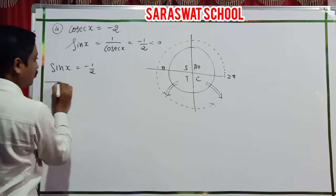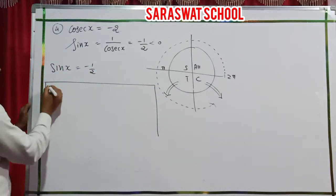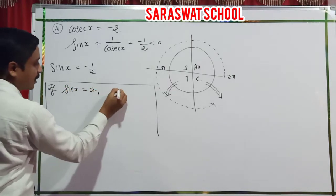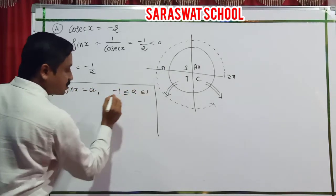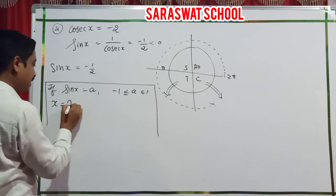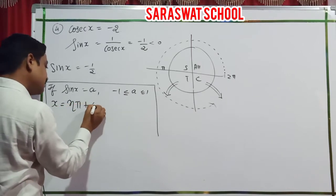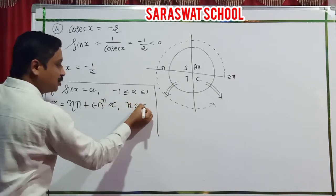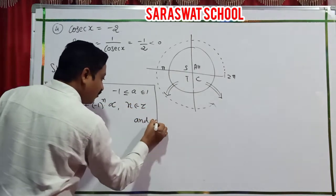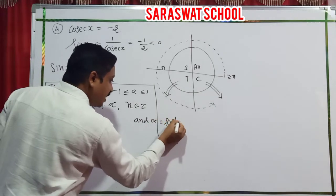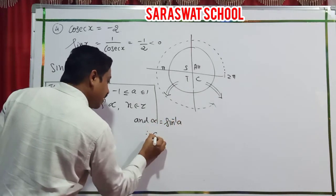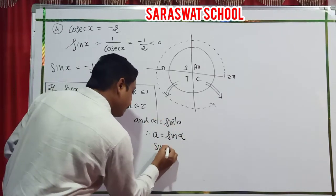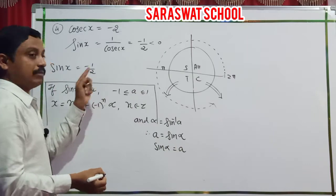The formula: if sine x equals a, where a belongs to the range minus 1 to 1, the solution is x equals n pi plus minus 1 raised to n into alpha, where n belongs to Z. And alpha equals sine inverse a, meaning sine alpha equals a. My a value is minus half.